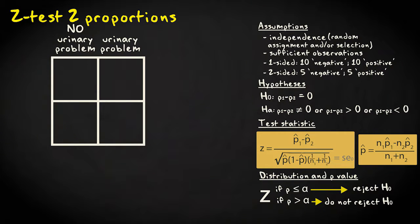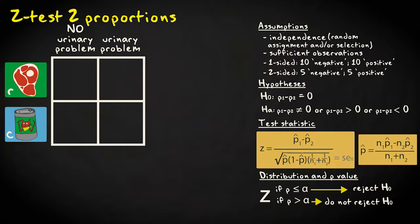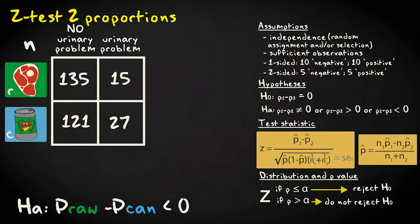Suppose I want to compare the proportion of cats with urinary problems in a sample of cats on a raw meat diet and a sample fed with canned food. I expect the raw meat group to have less urinary problems. Here are the data.